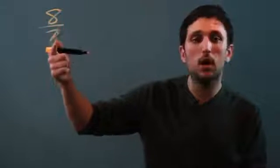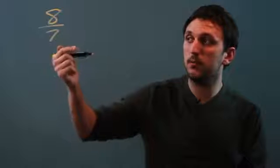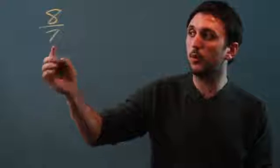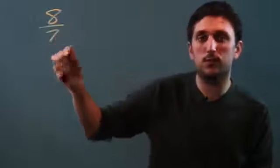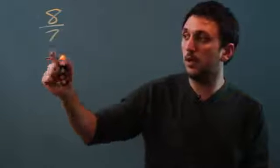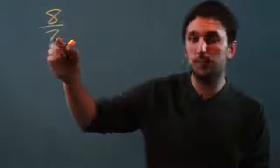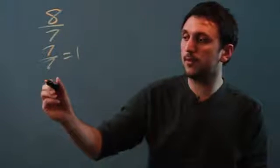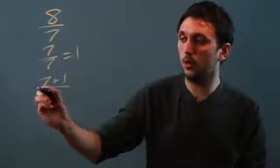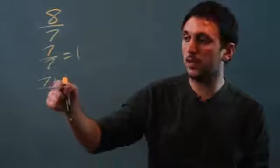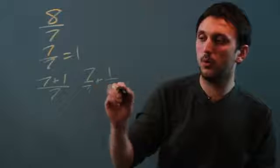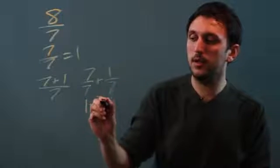So 8 sevenths — 8 over 7 — is a fraction. We want it to be a mixed number, which is a whole number and a proper fraction. So we're looking for what whole number we can take out of 8 sevenths. Any whole number would be a number over itself, so 7 over 7 is 1. Now, we have 8 sevenths, so that's 7 plus 1 over 7. So we can say 7 sevenths plus 1 seventh, which is like saying 1 and 1 seventh.